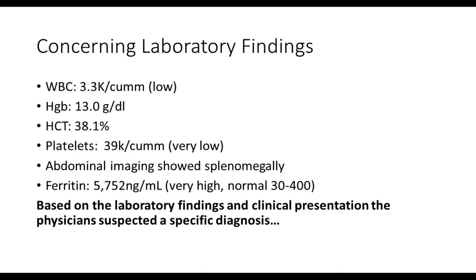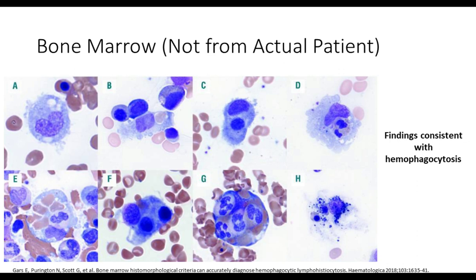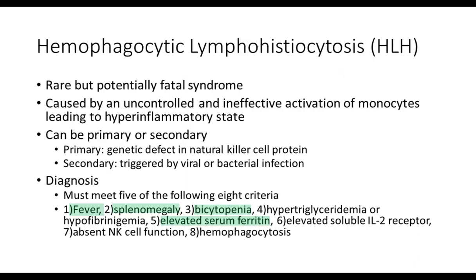Based on these laboratory findings and clinical presentation, the physician suspected a specific diagnosis. It was not what we've been talking about — keep in mind, this is winter. Ehrlichia really wasn't on their radar. What was being suspected is depicted here in the bone marrow of an unrelated patient. There are white blood cells that are phagocytosing red blood cell precursors and other white blood cells — highly abnormal findings consistent with what we call hemophagocytosis.